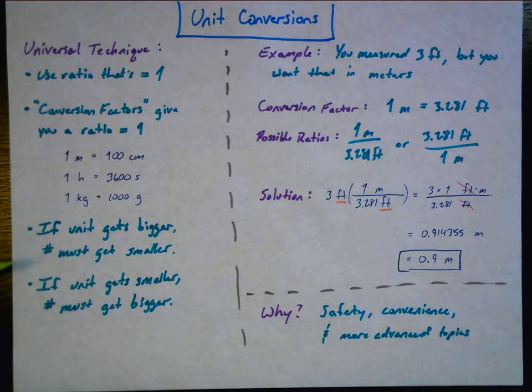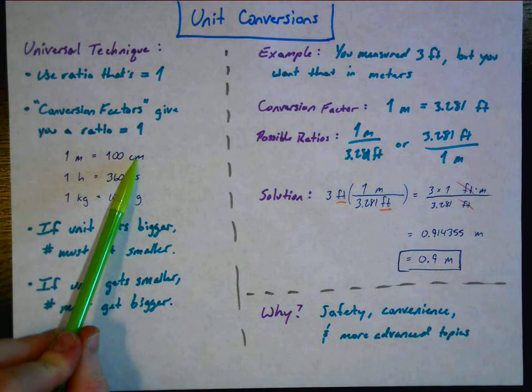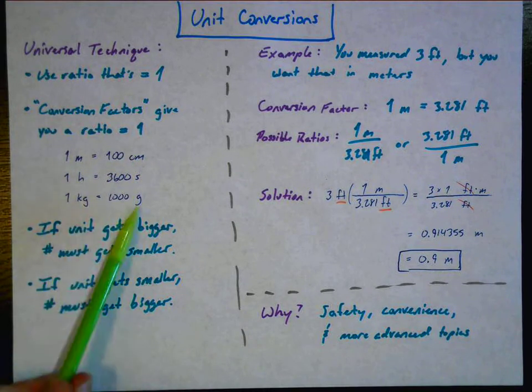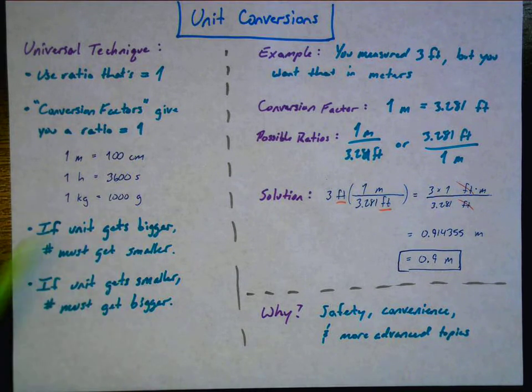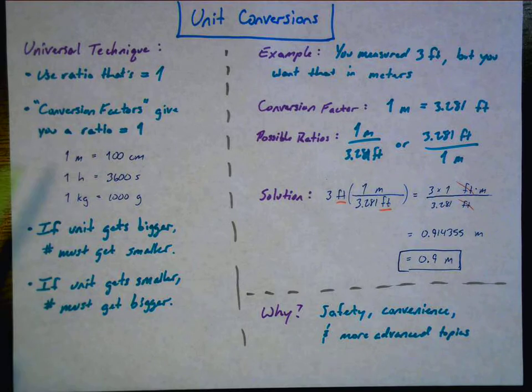Also in this technique of doing unit conversions, here's a way to check what's going on when you're performing the conversion. If the unit is getting bigger, then the number must get smaller, so it's opposite. If the unit gets smaller, the number must get bigger. For example, our unit goes from meters to centimeters, the unit gets smaller. Well, look at the number. The number got bigger. And that's true of these other examples as well. And we'll see this.